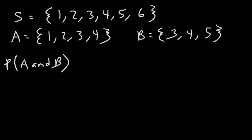In order to find out, the first thing we need to do is write the sample space of events A and B. So this is the intersection of A and B. So the numbers that correspond to event A and B are three and four.